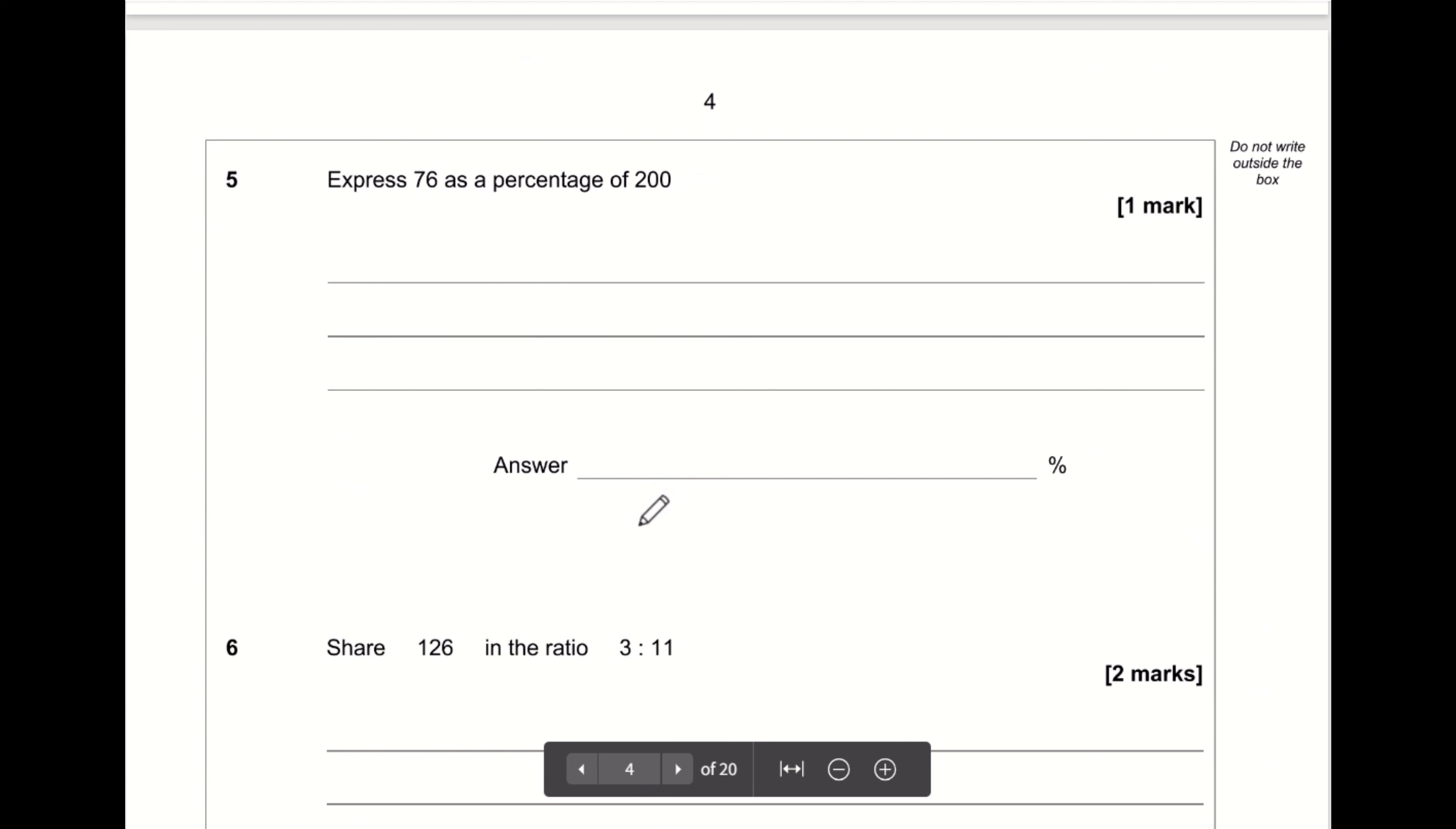Express 76 as a percentage of 200. Well, 76 out of 200, that is the same as what out of 100. We can see that the number on the bottom has been divided by two. So let's divide 76 by two, and 76 divided by two is 38. So the answer is 38%.